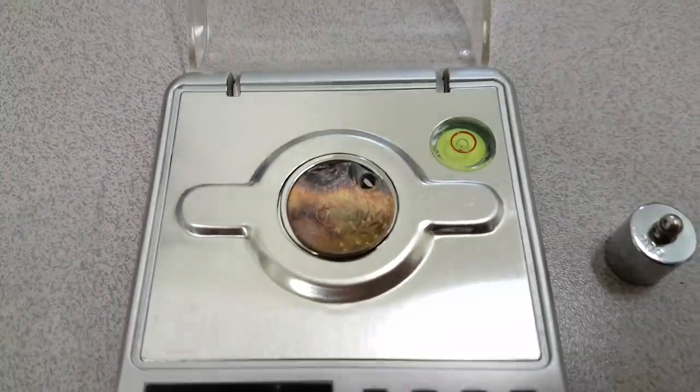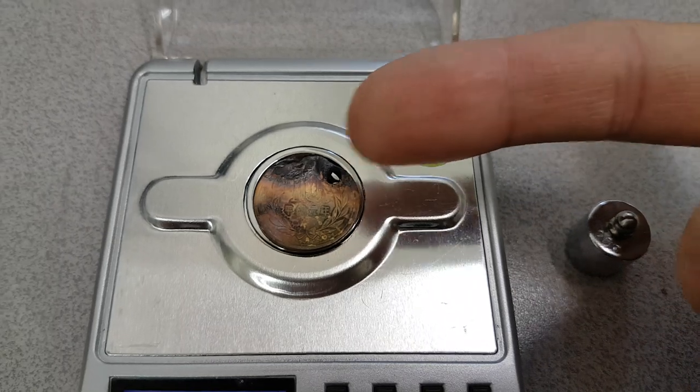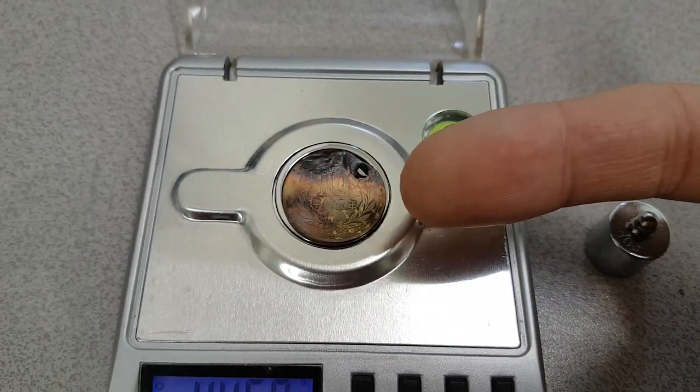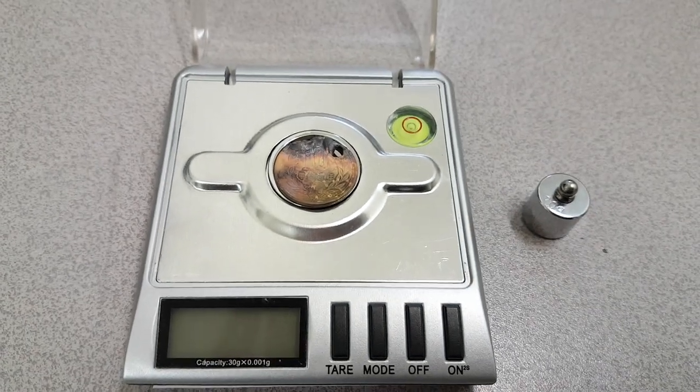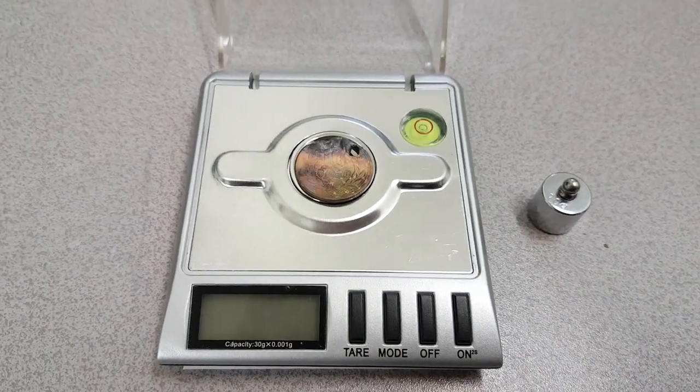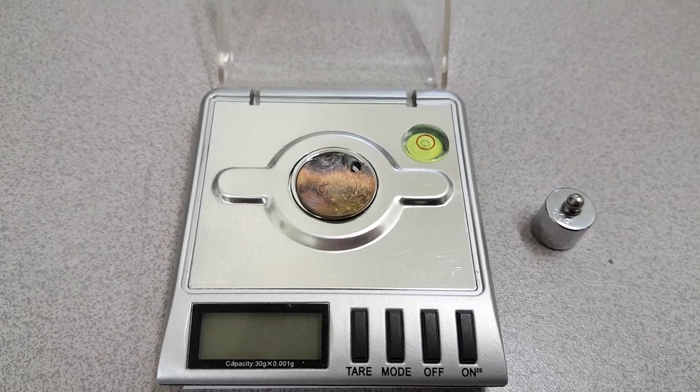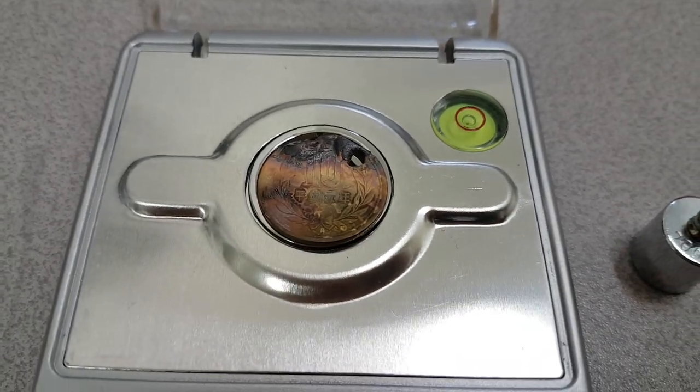And also we could say that there's been some gain in weight by oxidation here, and maybe some oxidation that fell off has caused some loss in weight. So there we have it. That is the measuring of the weight of the 10 yen coin. Thank you.